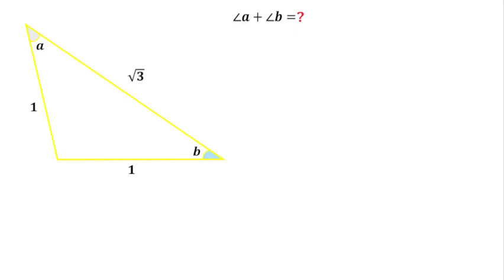Welcome to Technic Mind. In this question there is a triangle as we can see and the sides of this triangle are 1 unit, 1 unit and root 3, and we have been asked to find the sum of these two angles, that is angle A plus angle B.